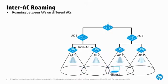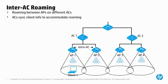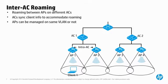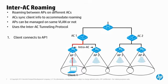Inter-AC roaming occurs when a client roams between APs controlled by different ACs. The ACs synchronize all client authentication and user profile information to ensure seamless roaming. APs can be managed on the same VLAN or on different VLANs. Inter-AC roaming relies on IACTP, an HP proprietary protocol that enables ACs to securely communicate via a generic encapsulation and transport mechanism. In this scenario, Client 1 initially associates to AP1, so AC1 is its home AC. Client 1 authenticates, and the resulting authentication and crypto-key information is stored on AC1.